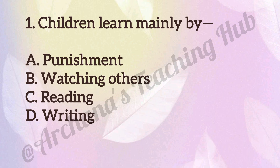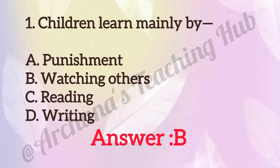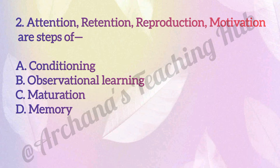Now some MCQs on this topic. Question one: children learn mainly by — A) punishment, B) watching others, C) reading, D) writing. Answer is B, watching others. Children learn through watching others. Question two: attention, retention, reproduction, motivation are steps of — A) conditioning, B) observational learning, C) maturation, D) memory. Answer is B, observational learning.